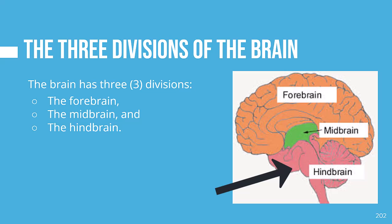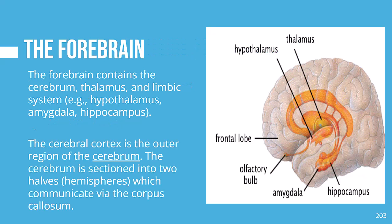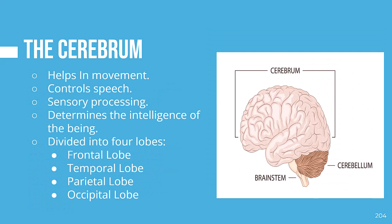The forebrain contains the cerebrum, thalamus, and limbic system, which involves the hypothalamus, amygdala, and hippocampus. The cerebrum is covered by the cerebral cortex — the surface of the brain with bumps and folds: the gyri, the small grooves called sulci, and the large grooves called fissures. The longest, deepest fissure is the longitudinal fissure, dividing the brain into two halves connected by the corpus callosum. The cerebral cortex is associated with our highest mental capacities, such as consciousness, thought, emotion, reasoning, language, and memory.